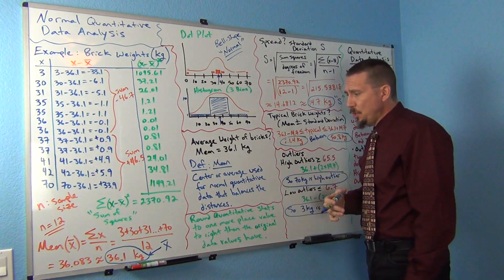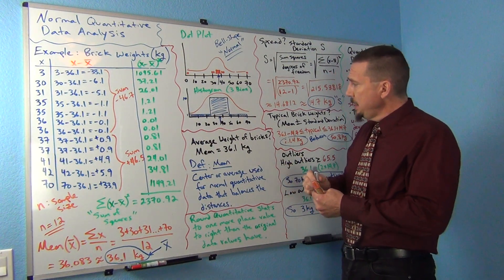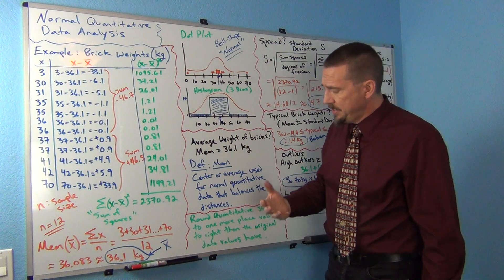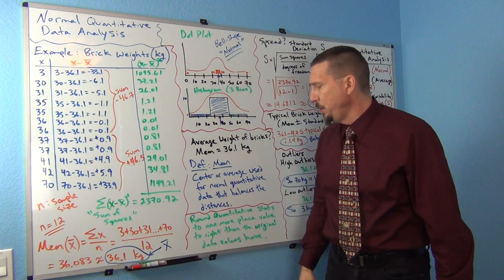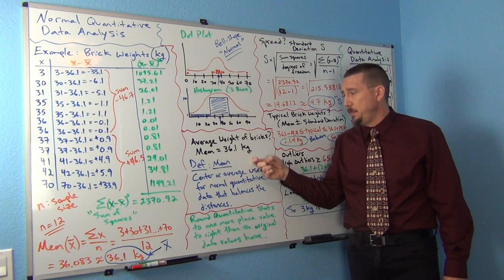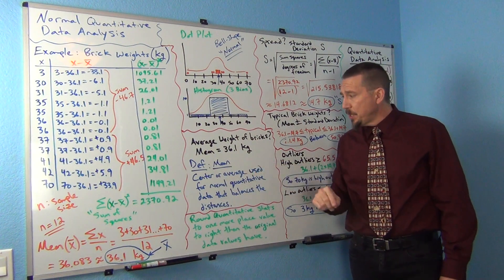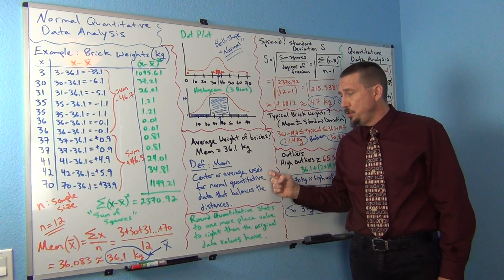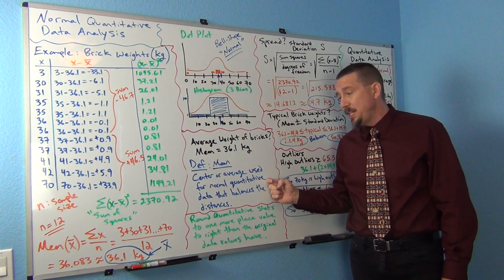Okay, so we're going to say that the average weight of these bricks is about 36.1 kilograms. Now let's get the formal definition of a mean.